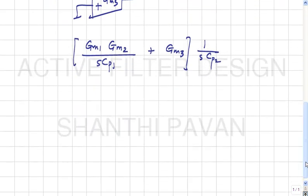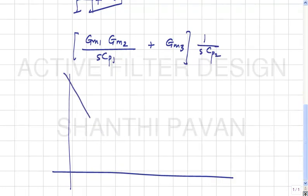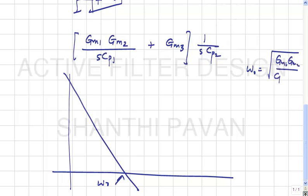At low frequency, most contribution to the loop gain comes from the GM1·GM2 second-order path. At high frequency, the contribution is dominated by GM3/Cp2. The unity gain frequency is ω₀ = √(GM1·GM2/(Cp1·Cp2)).